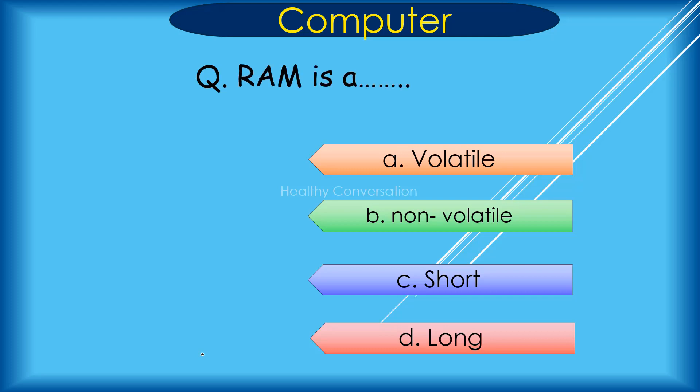Question: RAM is a dash memory. A. Volatile, B. Non-volatile, C. Short term, D. Long term. Correct answer is A. Volatile.